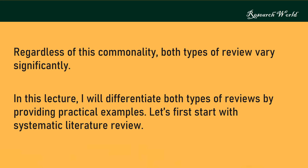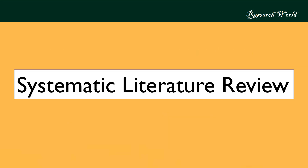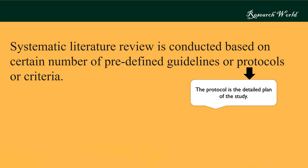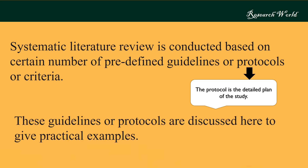Let's first start with systematic literature review. A systematic literature review is conducted based on a certain number of predefined guidelines, protocols, or criteria. The protocol is the detailed plan of the study. These guidelines or protocols are discussed here to give practical examples.